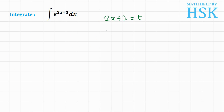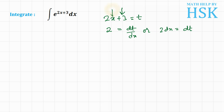On differentiating both sides with respect to x, we get 2 equal to dt upon dx, or 2 dx equal to dt. Here 3 is a constant so differentiation of 3 would be 0, and d/dx of x is equal to 1. So instead of dx we place dt upon 2.